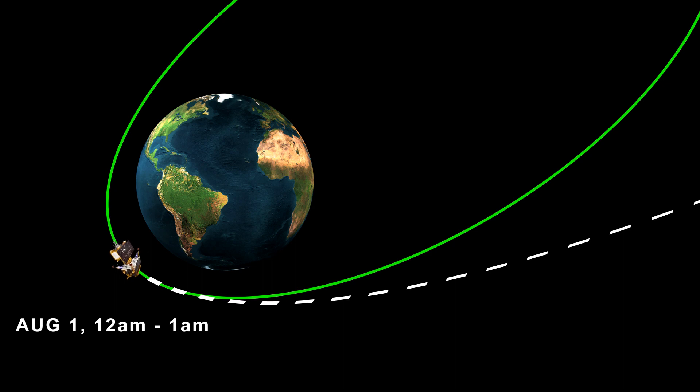The midnight maneuver is expected to last between 28 to 31 minutes and is done by firing the onboard thrusters of the spacecraft as it reaches the closest point to the Earth, known as perigee.